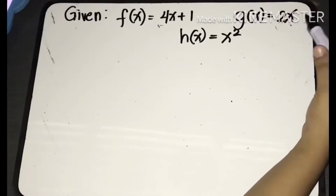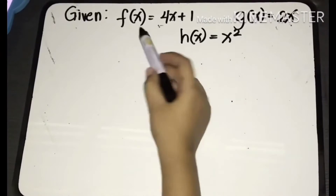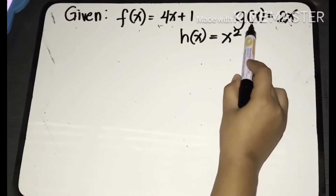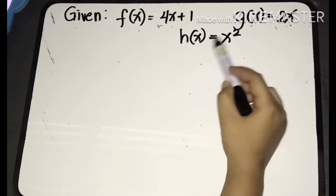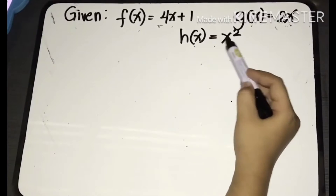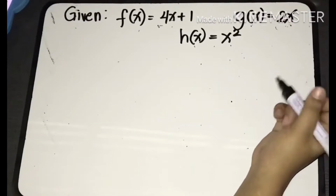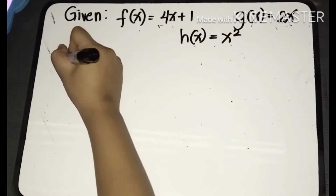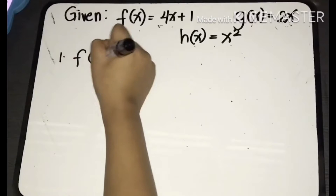Let's have the given functions: f of x, which is equal to 4x plus 1; g of x equal to 2x; and h of x, which is equal to x squared. We are asked to find f of g of x.